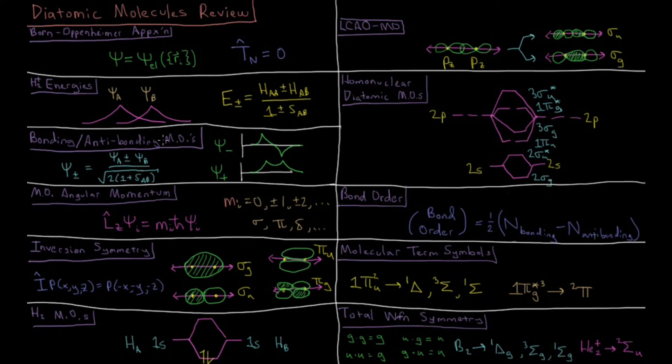For the negative linear combination, psi-, we have a depletion of electron density between the two nuclei due to destructive overlap between these two wave functions, and this leads to it being an antibonding MO.